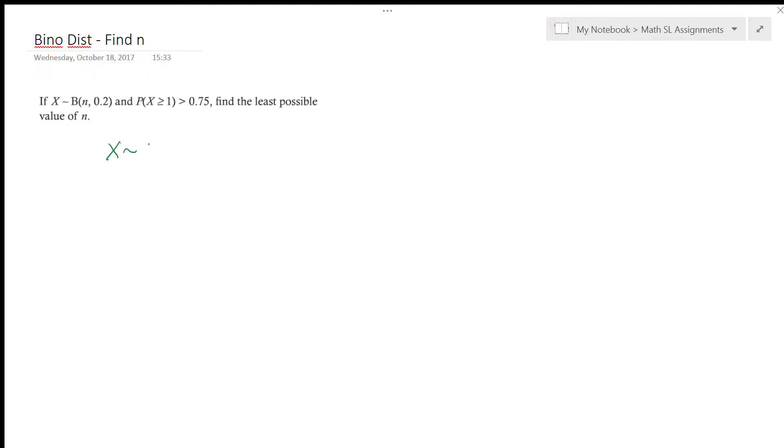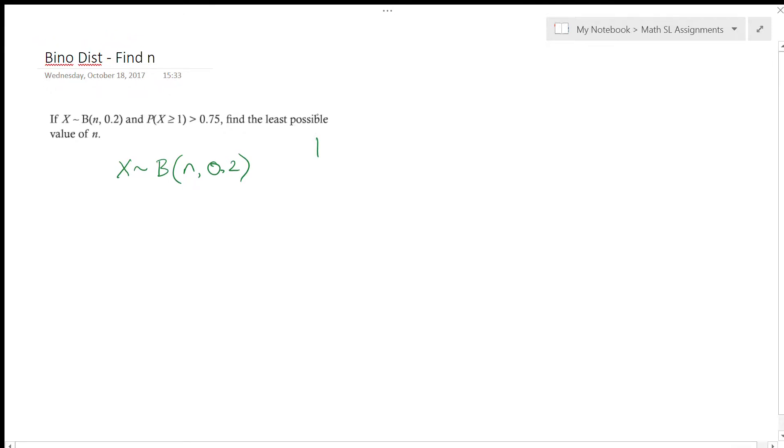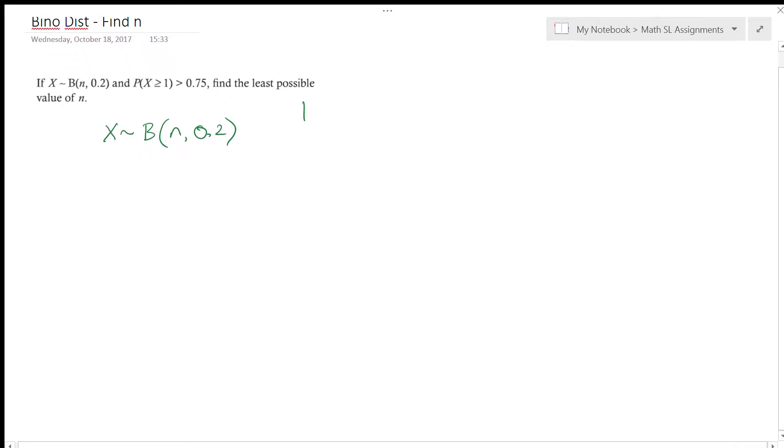So all we know is we have a binomial distribution. I don't know how many times I repeat the experiment. I do know my probability of success is 0.2. And this other one here which is kind of interesting is that I know that the probability that x is greater than or equal to 1 needs to be greater than 0.75.